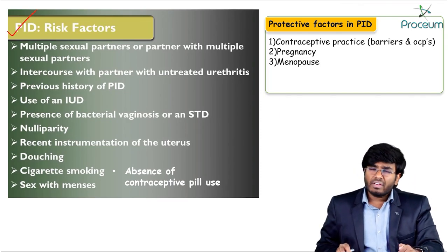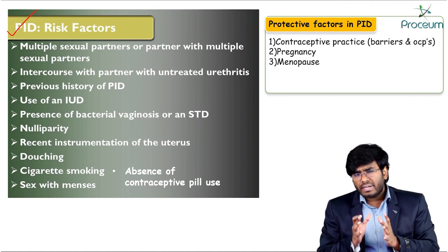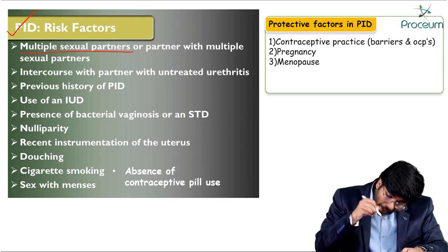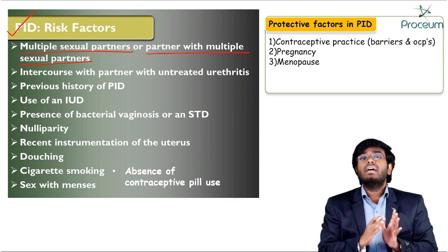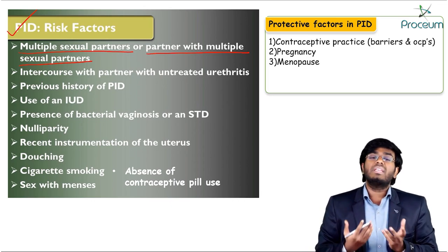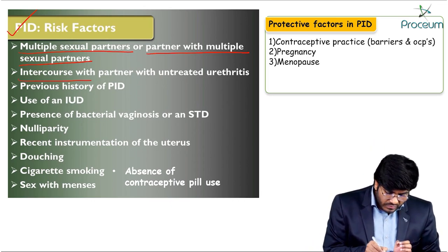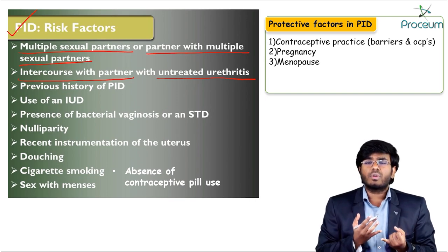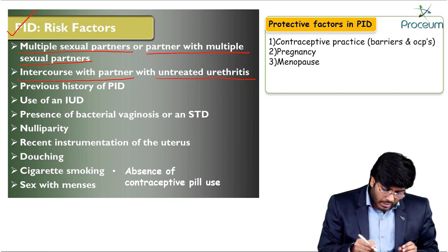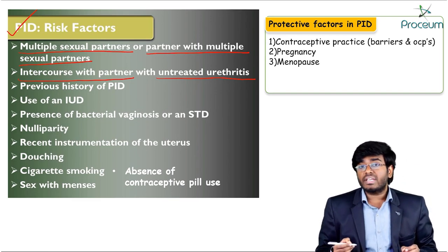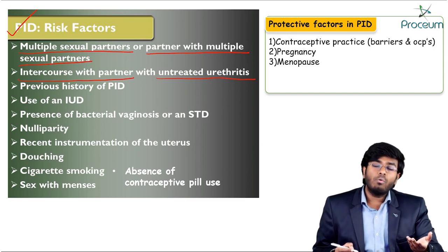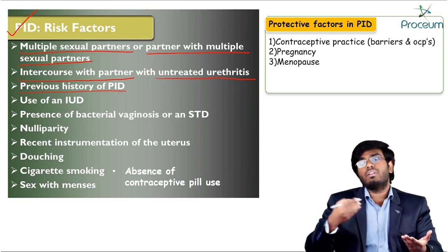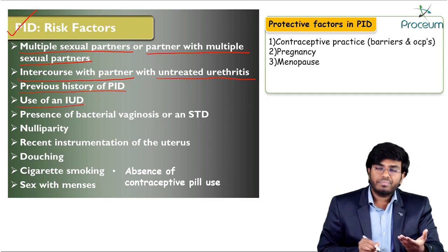Risk factors for PID include: multiple sexual partners, or having a partner with multiple sexual partners; intercourse with a partner having untreated urethritis (possibly due to Gonorrhea); and a prior history of PID, which places the female at risk for new PID episodes. IUD use is also a risk factor, as the device can carry infection upward.